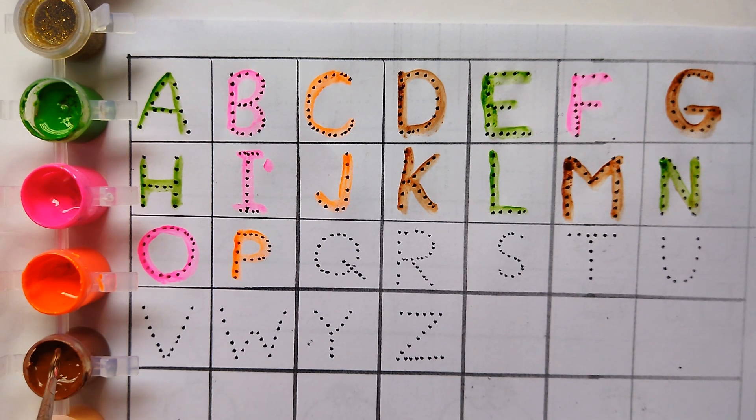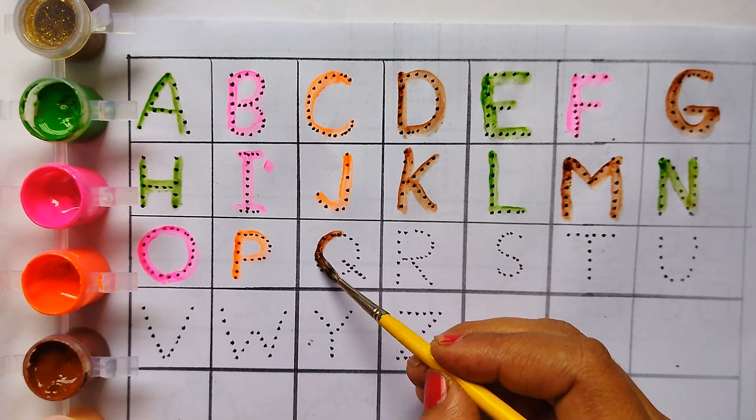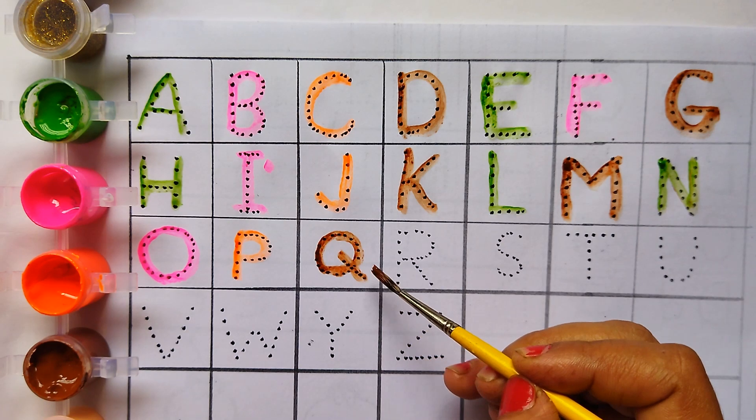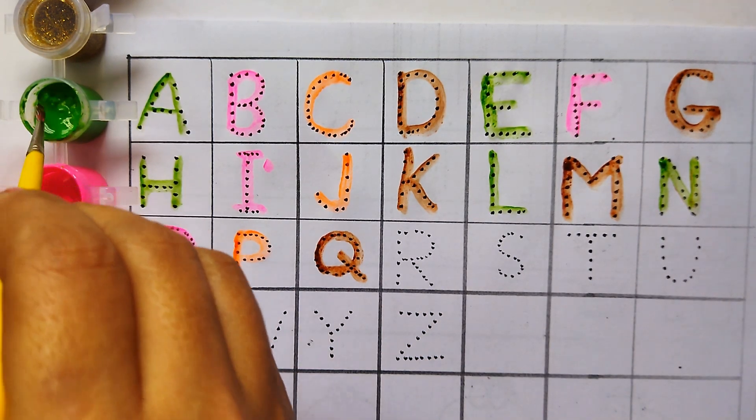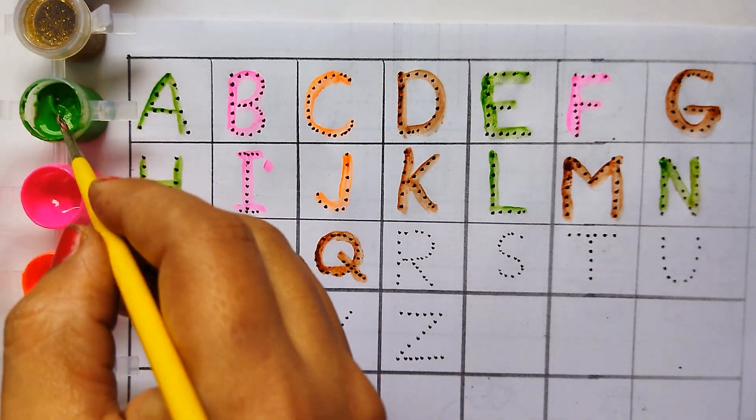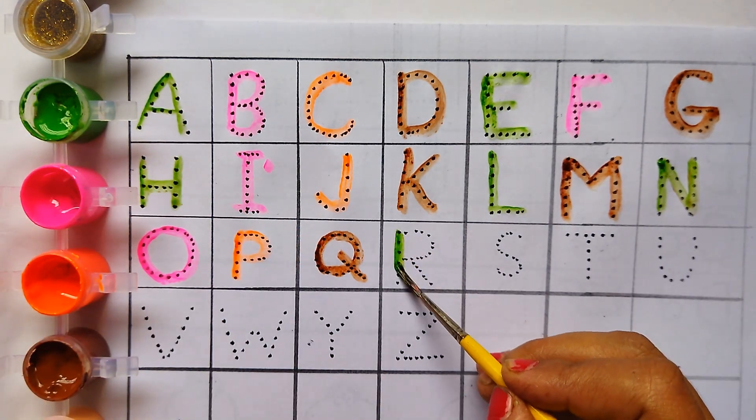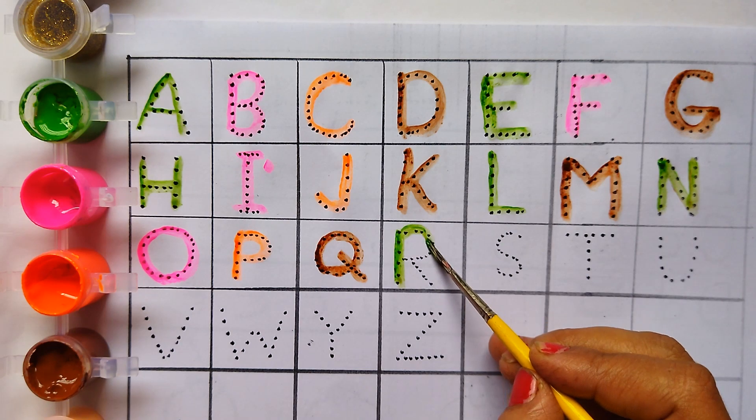Brown colour Q. Q for queen. Green colour R. R for rabbit.